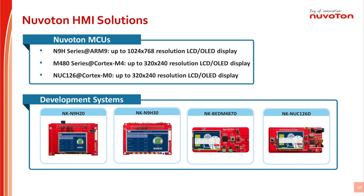Currently, there are four development systems, including NK-N9H20, NK-N9H30, NK-NuBMD-N487D, and NK-NUC126D. More detailed information will be covered in the following content.